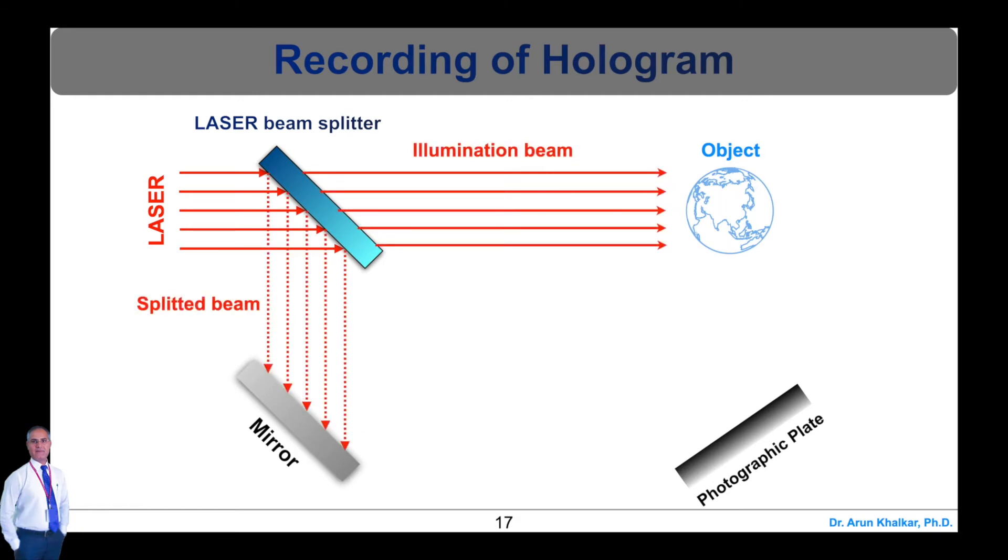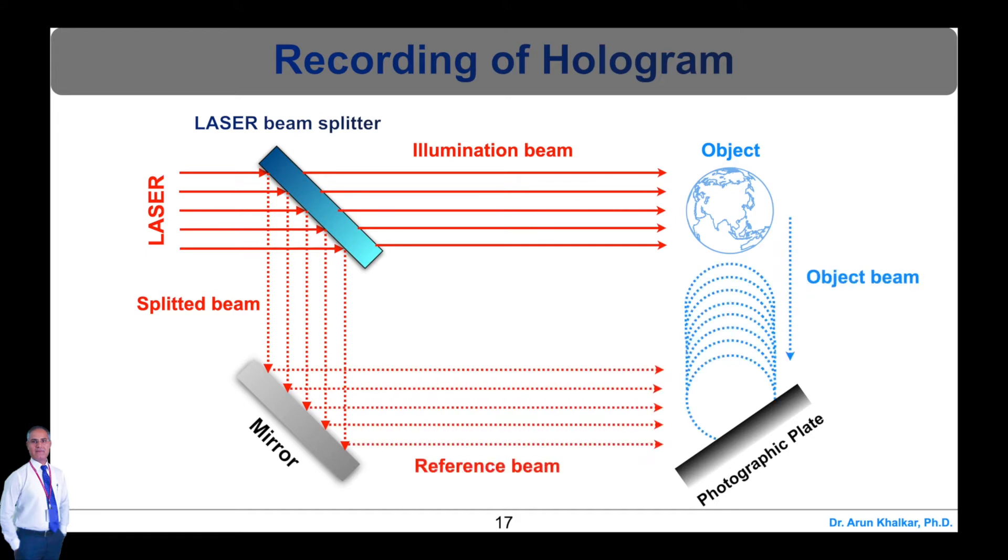The other part of the splitted beam that is transmitted from the beam splitter strikes on the photographic plate after suffering reflection from the various points of the object. This beam is called object beam.